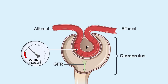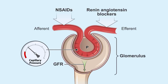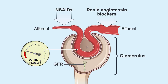Together, the use of NSAIDs and renin-angiotensin system blockers may result in both afferent vasoconstriction and efferent vasodilation and lead to a dramatic decrease in glomerular pressure and GFR, causing acute kidney injury.